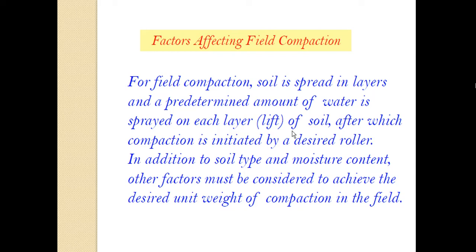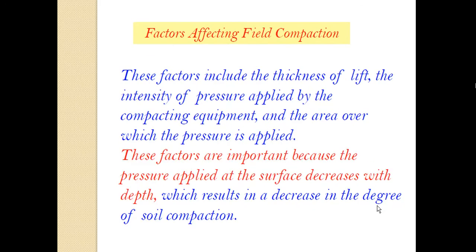In addition to soil type and moisture content, other factors must be considered to achieve the desired unit weight of compaction in the field. These factors include the thickness of lift, the intensity of pressure applied by the compacting equipment, and the area over which the pressure is applied. These factors are important because the pressure applied at the surface decreases with depth - when depth increases the pressure decreases, which results in a decrease in the degree of soil compaction.